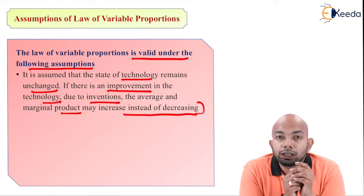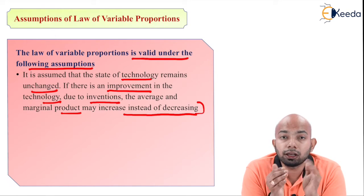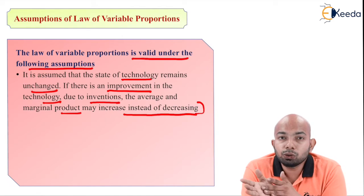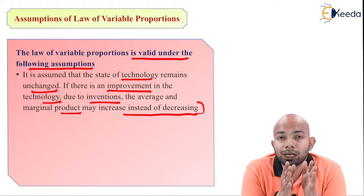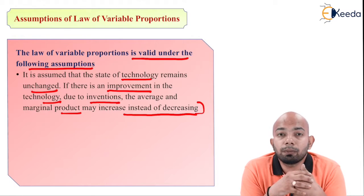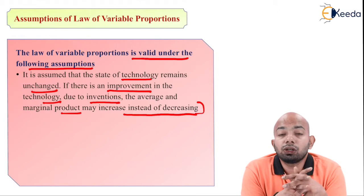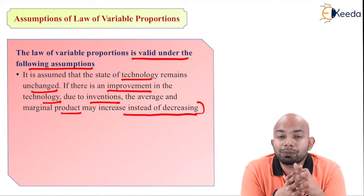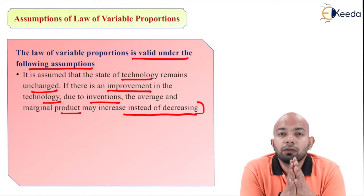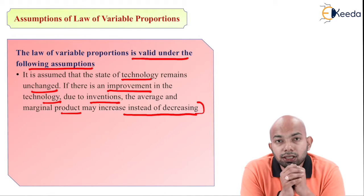For example, if you have a four-wheeler car and you get technological advancement with features your current car doesn't have, you will be willing to buy the new car no matter how many years or kilometers you've used the old one. So instead of decreasing marginal utility, you will see increasing marginal demand for that product. The assumption states there will be no technological advancement, so marginal utility keeps decreasing.